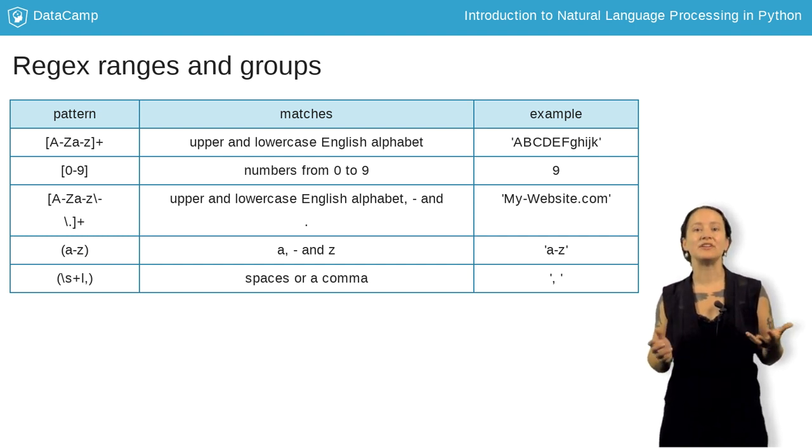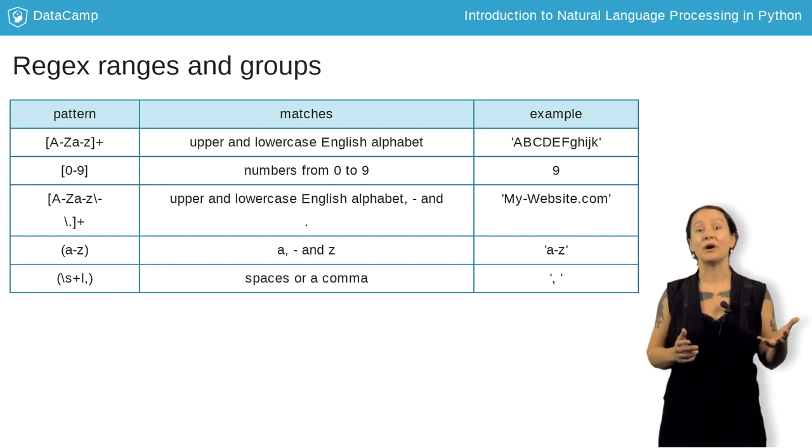We can also make ranges to match all digits, 0 hyphen 9, or perhaps a more complex range, like uppercase and lowercase English, with the hyphen and period.